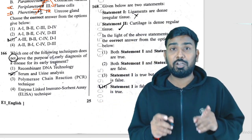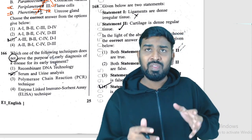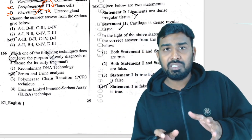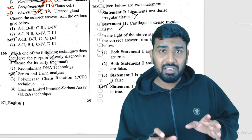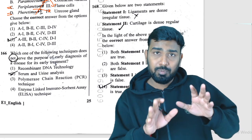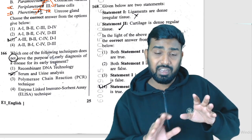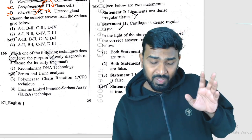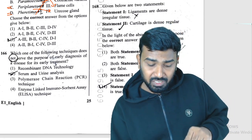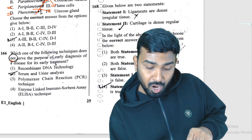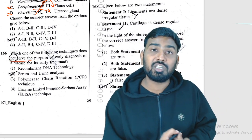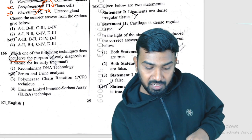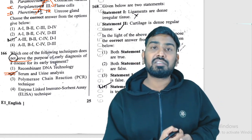Question 166: which technique does NOT serve the purpose of early diagnosis? PCR and RFLP are used for early diagnosis in biotechnology. Serum analysis and urine analysis do not serve the purpose of early detection — so that is the answer for Q166.